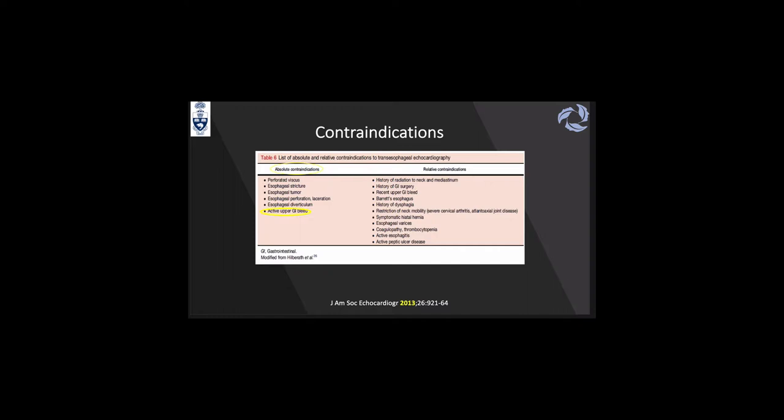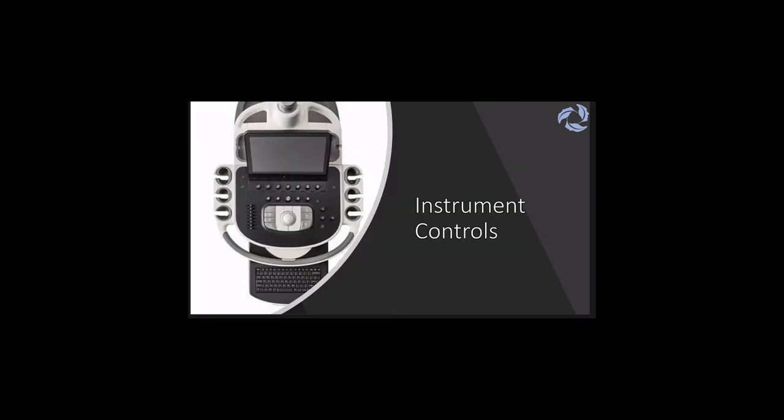On the right-hand side you can see the relative contraindications. One thing we always discuss is whether patients with hiatal hernia are an absolute contraindication for transesophageal echo — the guidelines only mention it as a relative contraindication. We have now talked about contraindications and indications of TEE, so we will follow up with the instrument controls.